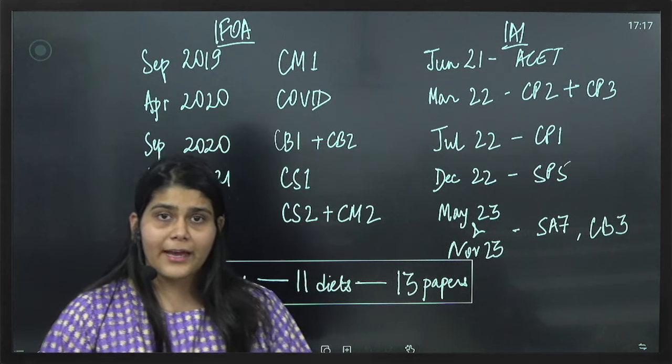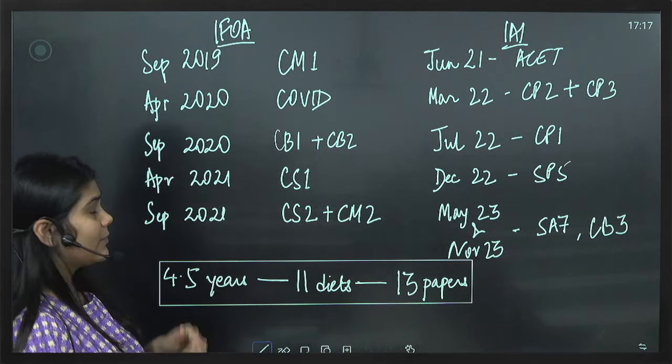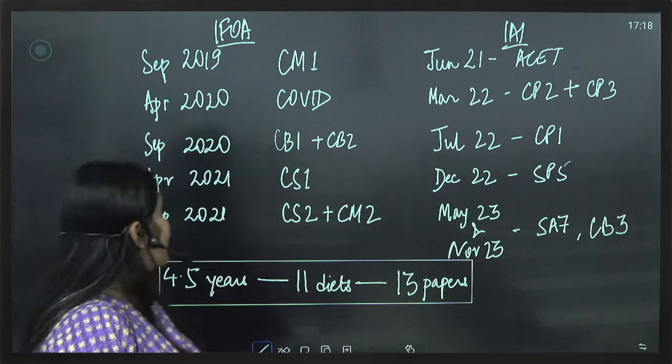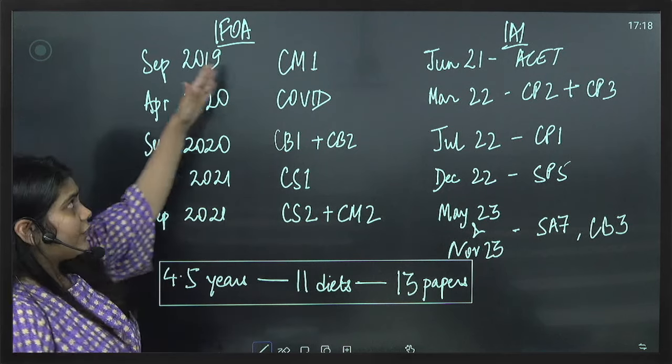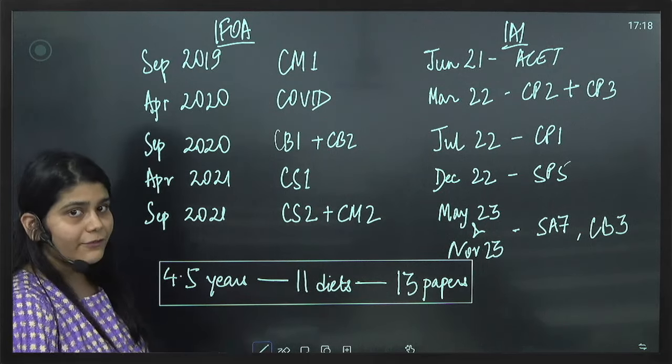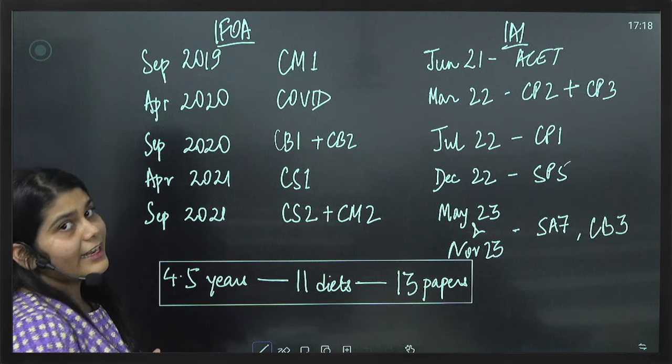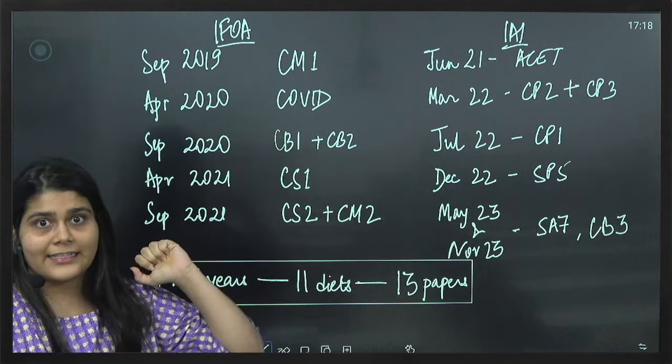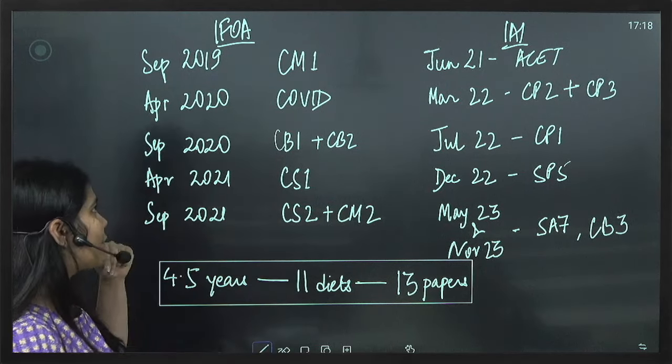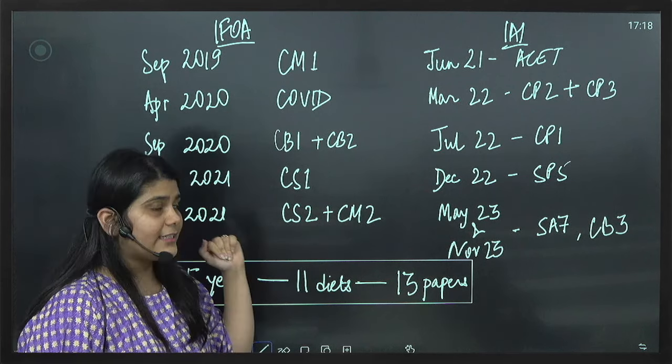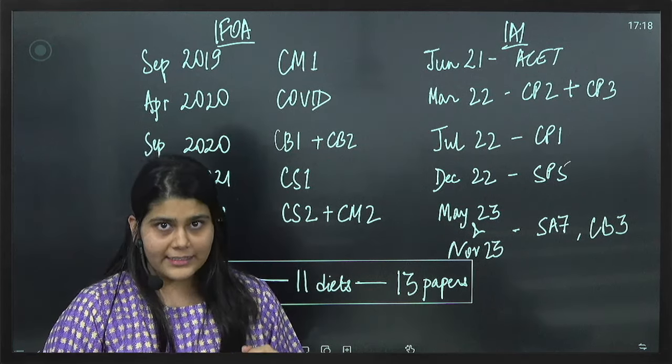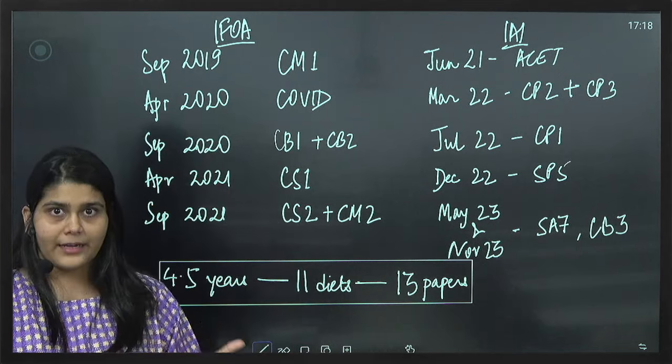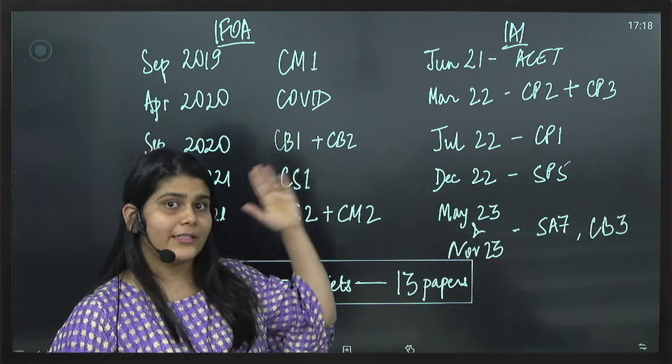I began my Actuarial Journey in September 2019 because I graduated from school in May 2019. I began with the first paper which was CM1. Since I was appearing from the UK Institute, I did not have to give any entrance examination at that time. In April 2020 the examinations got cancelled since there was COVID. In September 2020 I appeared for two papers, CB1 and CB2.